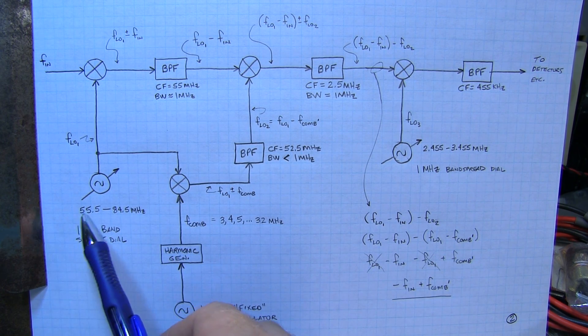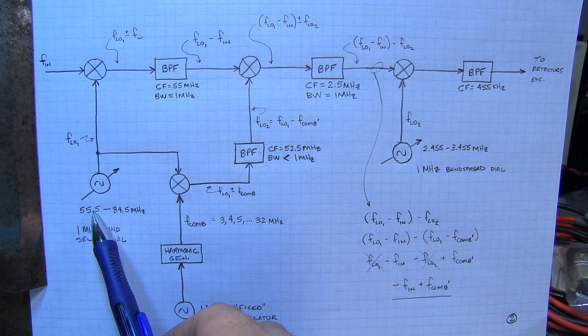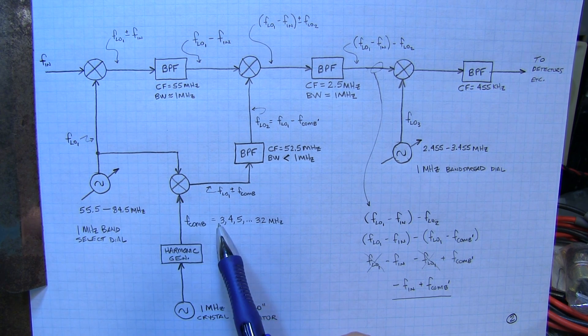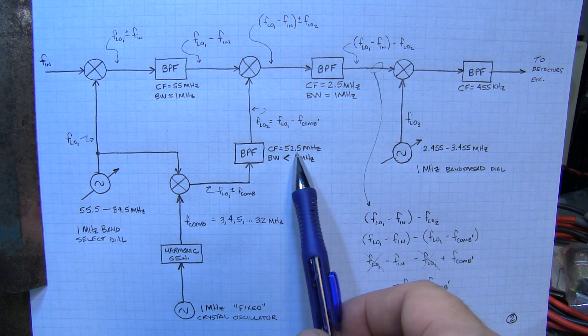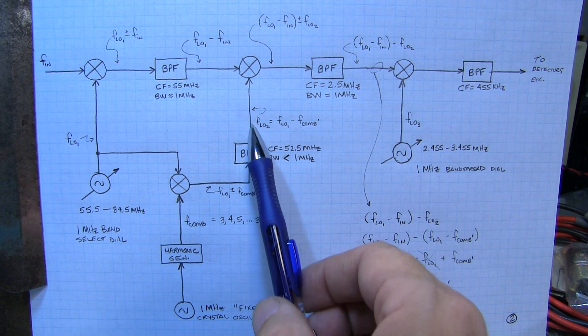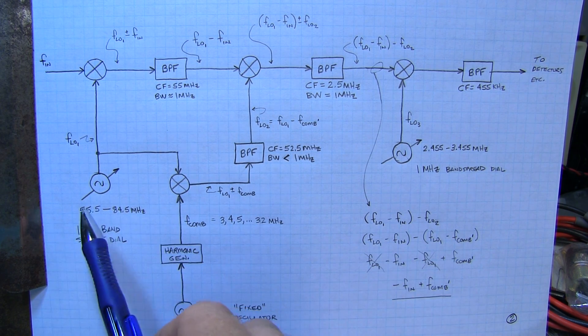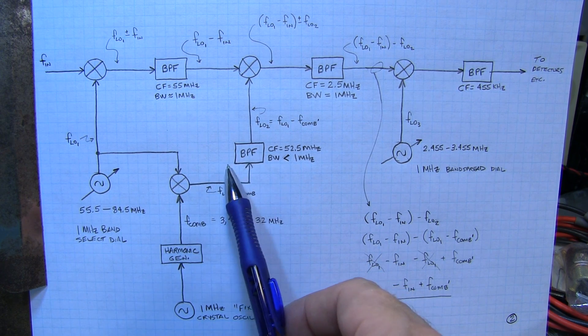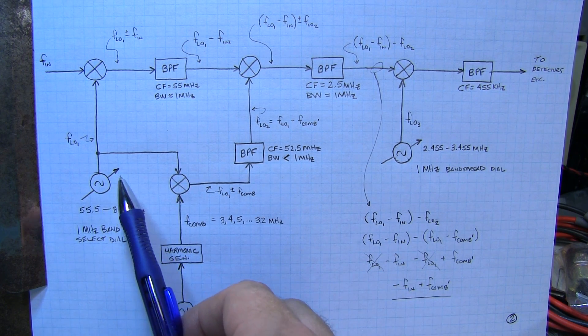That in the case of the FRG7 is tuned to 52.5 MHz and has a bandwidth of less than 1 MHz. So what is that going to do? It's essentially going to select just one of those components, one of the difference components between that local oscillator and the comb. Let's look at the bottom of the band for example at 55.5 MHz here. When that is mixed with the 3 MHz tone that will wind up with a signal coming out here at 52.5.